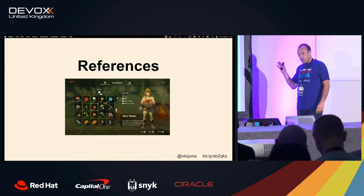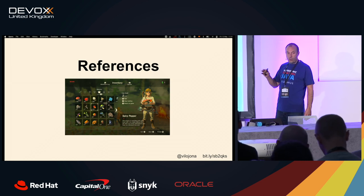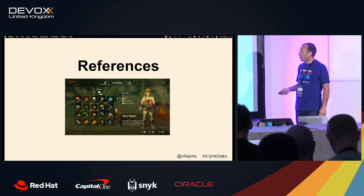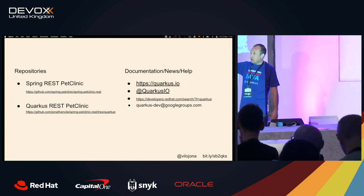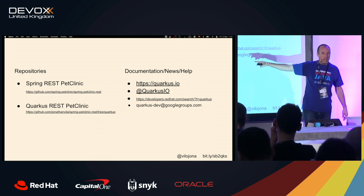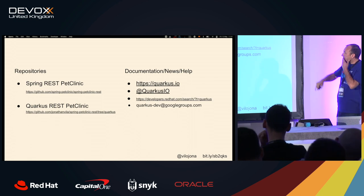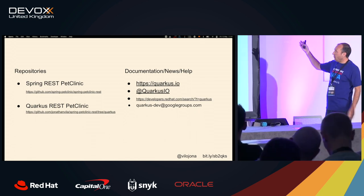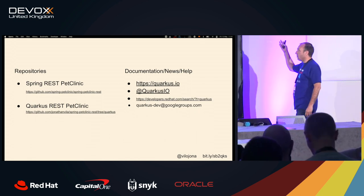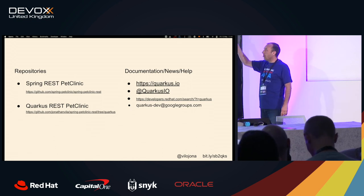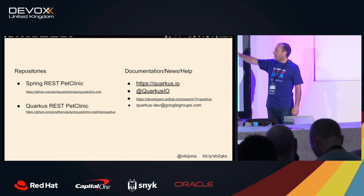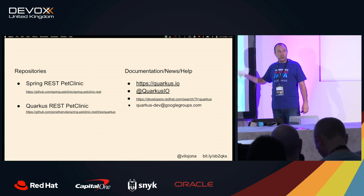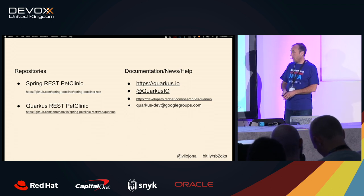I will give you some references — and one of them will help you on those migrations. Here you have the two repositories: the original one and the one that has all the changes. And if you want to know more about Quarkus: the main page quarkus.io, the Twitter handle, and developer.redhat.com where you will find lots of tutorials — very interesting and nice to do.